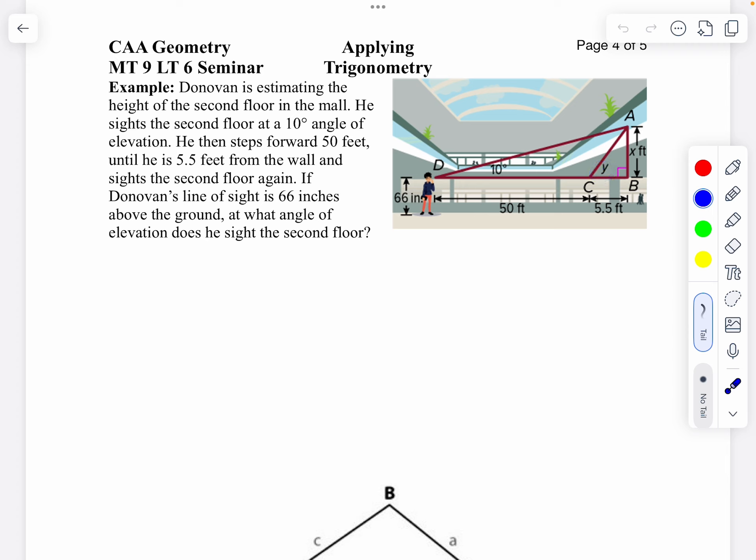I'm trying to find y here, but the problem is I have two unknowns: I have y and x. That's not going to help me, so what we're going to do is look at the big triangle first. I know I want to find x, the height that's above his eyes.